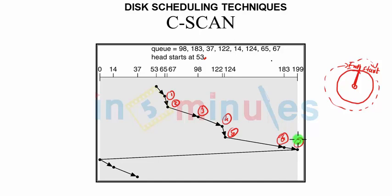183 was the highest request which was made. Still it will go to the boundary, that is 199, and from there it will come reverse. But this time reverse is rotation.